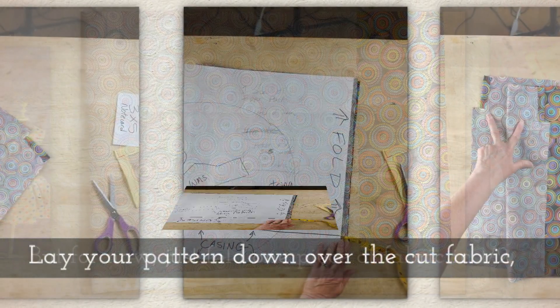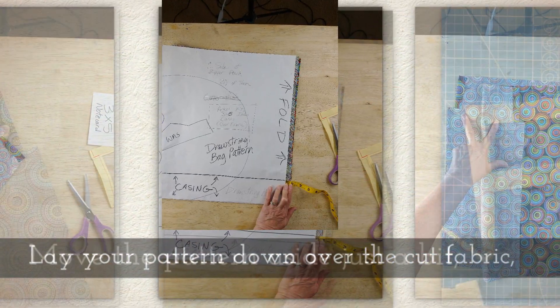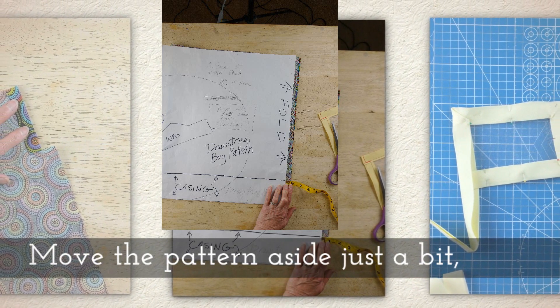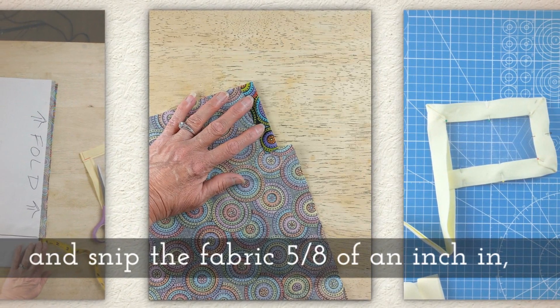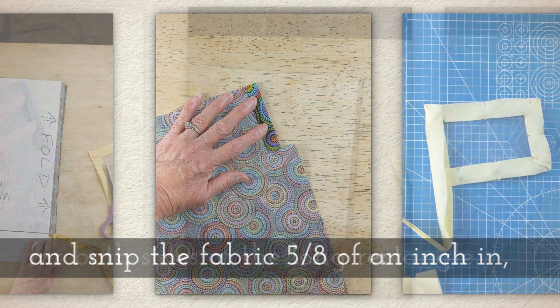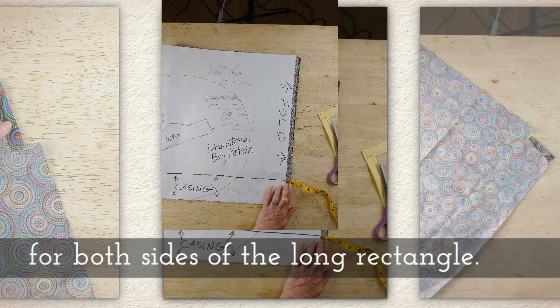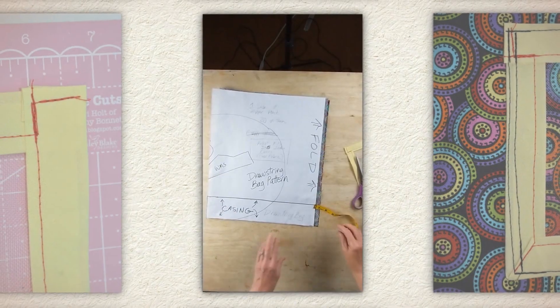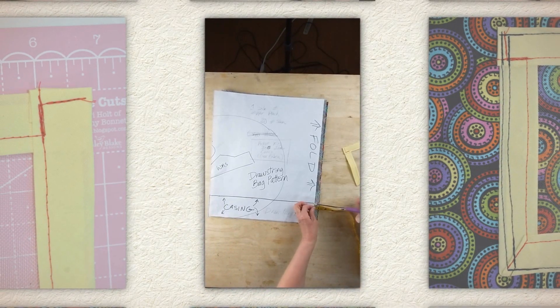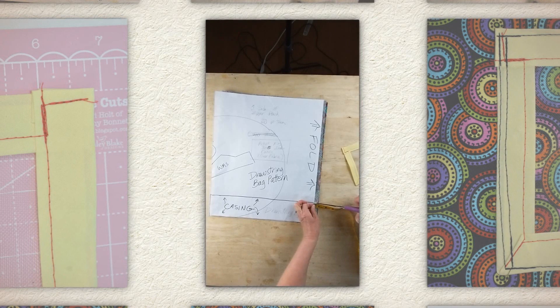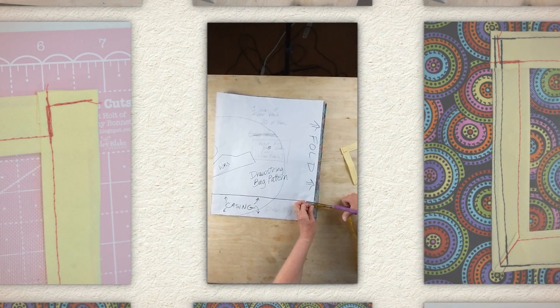Lay your pattern down over the cut fabric. Move the pattern aside just a little bit. And then you're going to snip the fabric 5 eighths of an inch in for both sides of the long rectangle. I've got my little tape measure and I've measured 5 eighths of an inch deep. And right where my casing line is, I just snip that fabric just a little bit.